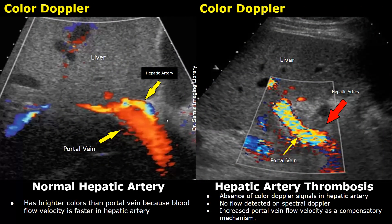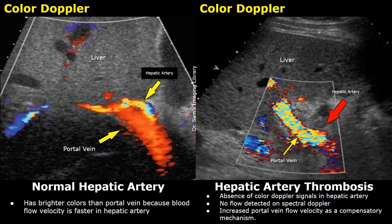In the image on the left, color Doppler is applied at the porta hepatis, where we can see the portal vein and the hepatic artery. The larger vessel filled with red color is the portal vein. The smaller vessel next to the portal vein, with brighter colors, is the hepatic artery. The hepatic artery has brighter colors because blood flow velocity is much higher in the hepatic artery than in the portal vein. This is how we can find the hepatic artery and distinguish it from the portal vein.